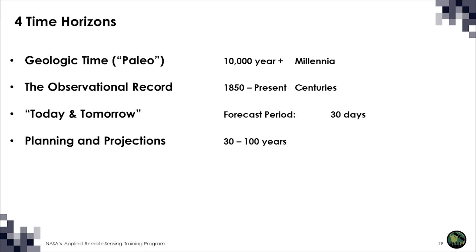When I talk about four time horizons for thinking about flooding, I'd like to suggest these. Geologic time — what scientists call the paleo record — is perhaps 10,000 years or longer. The observational record, which many of you are involved with as providers or users, starts in 1850 from tide gauges, and then in 1993 in the more sophisticated satellite record and remote sensing. Then the next time period is today and tomorrow — the great concern of prediction: what will flooding be in the next few hours when a storm is approaching, or as sea level brings the water higher. This can be a forecast period of three hours, 30 days, or 30 years, which gets us to the fourth category for planning and projection.